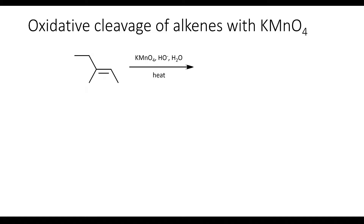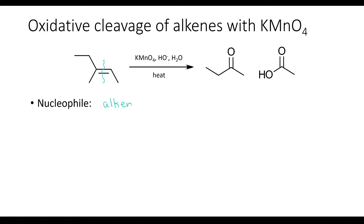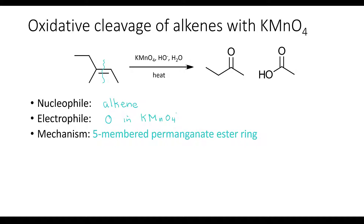Let's start by looking at an example of alkene oxidation with potassium permanganate. When an alkene is exposed to potassium permanganate under basic conditions and is heated, the product is going to be oxidation. During the oxidation process, the alkene bond is broken and the carbons that were part of the alkene become doubly bonded to oxygens. Depending on how many substituents the alkene had, the products may either be ketones, carboxylic acids, or carbon dioxide. The nucleophile is the alkene, and the electrophiles are the oxygens on the permanganate ion. The mechanism proceeds through a five-membered permanganate ester ring and the products are maximally oxidized.